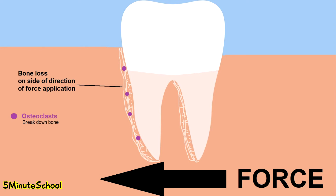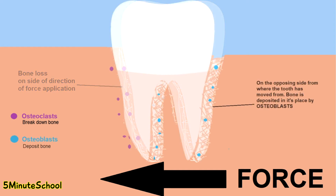However, if you maintain that pressure for a period of time, the bone on the opposite side of the tooth starts to break down. The types of cells which break down the bone are called osteoclasts. Over time the tooth is able to move into that new position, and the area where the tooth moved from gets filled up with newly created bone deposited by cells called osteoblasts.